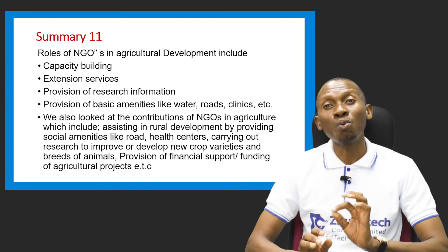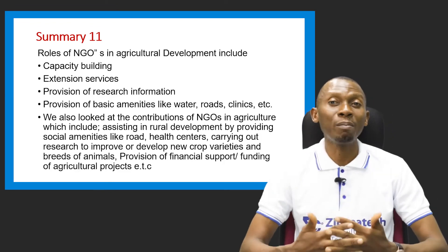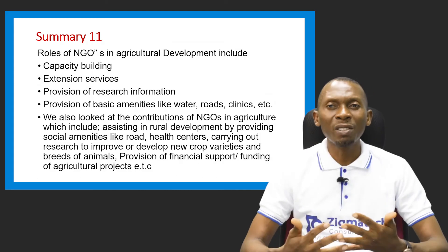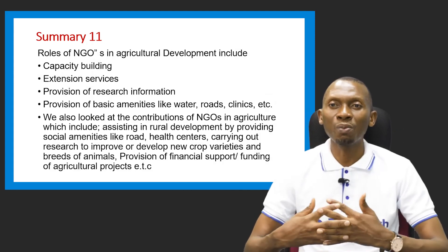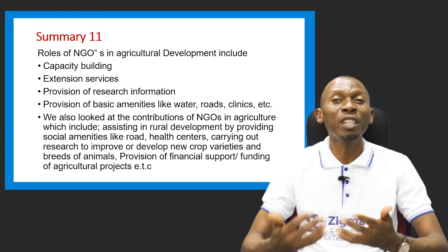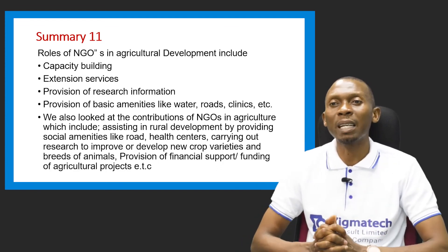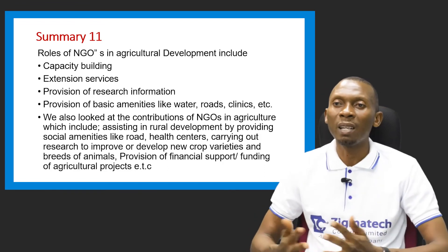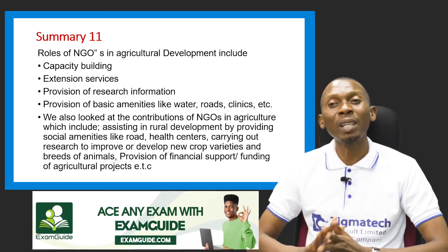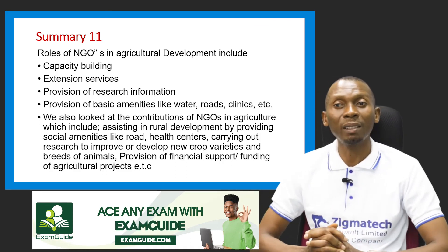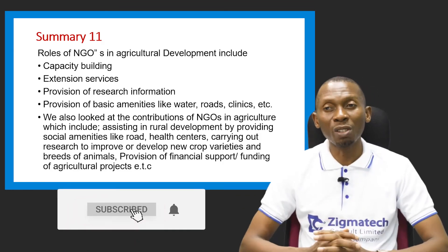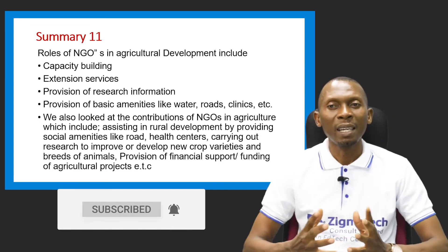We also looked at the roles of NGOs: capacity building, to help improve the farmer's ability to step up their level of production; extension services, to ensure that information about new developments and innovations in agriculture is passed across to farmers; and the provision of basic amenities like pipe-borne water, roads, and health centers. We also looked at the contributions of NGOs in agriculture, which include assisting in rural development by providing social amenities, carrying out research to develop new crops and breeds of animals, and the provision of financial support for agricultural projects.